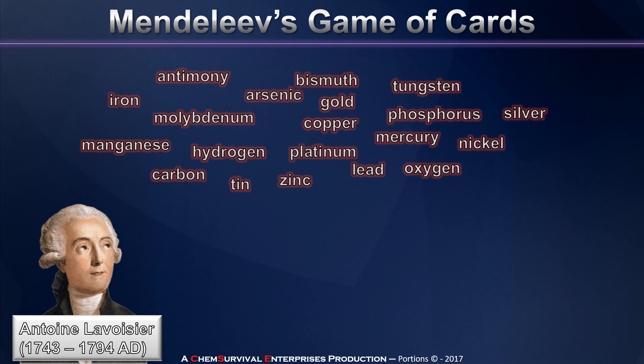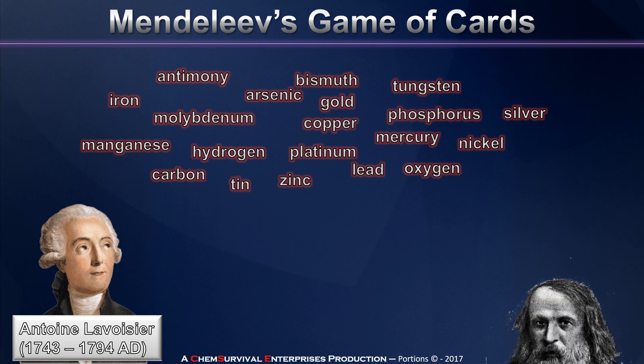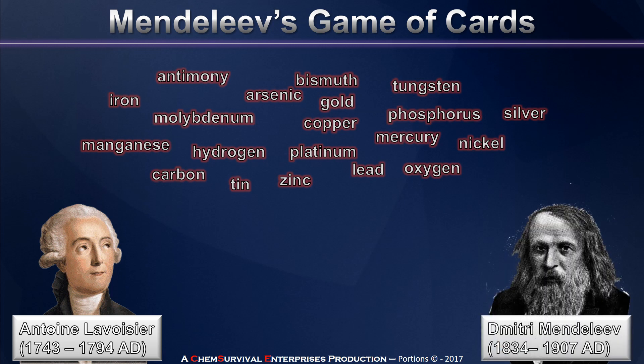But we all know that the universe tends to have order to things, and so in the following century a man named Dmitry Mendeleev decided to look for order in the elements rather than simply listing them off as they're found.